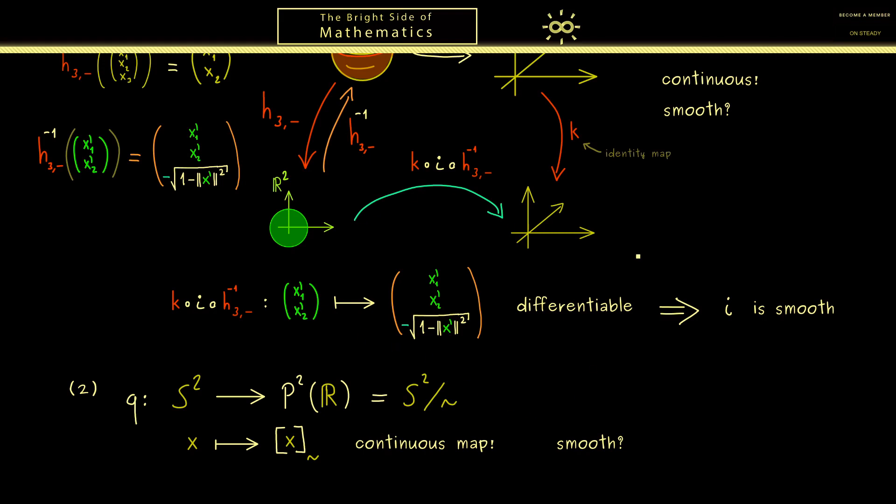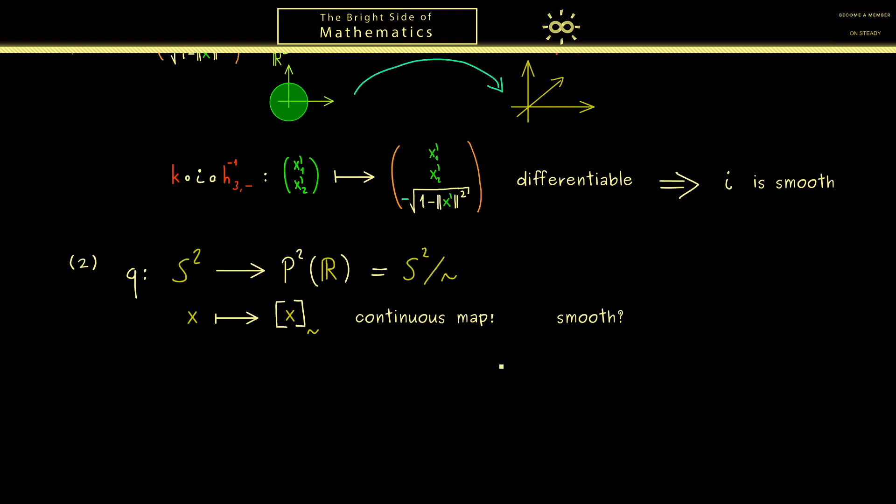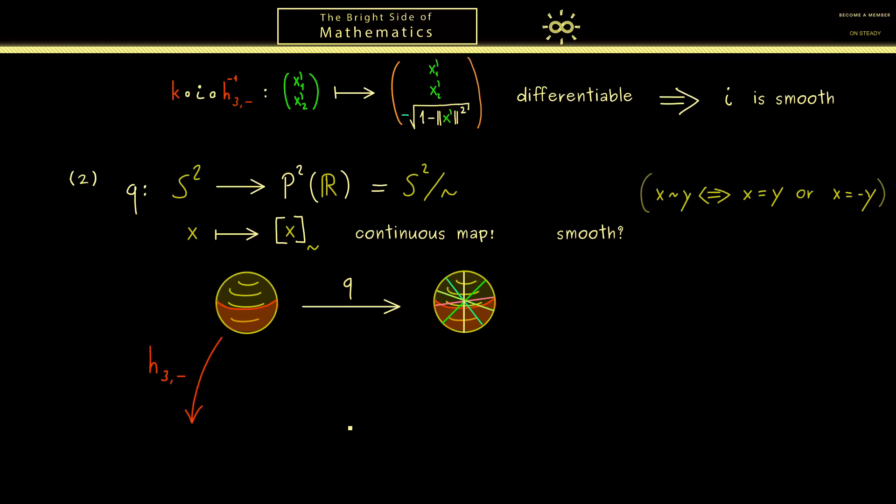To answer this question, we have to do the same as before, so we have to consider charts. Let's draw the picture, which means we have to visualize P² in some way. For this, please recall, the equivalence relation is given as x is equivalent to y, if x is equal to y, or equal to the opposite, to minus y. This means, for P², we just identify two points on the same line through the origin. So you see, it's not easy at all to visualize this manifold here. However, the important part for us here is, that we have also charts here. Now, on the left hand side, I want to take the same as before, so h3 minus. And on the right hand side, we can take a chart, as we have defined it in part 11.